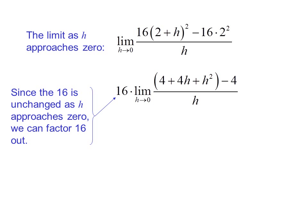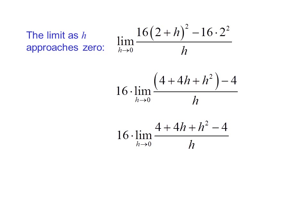We can do some algebra to evaluate the limit. Since the 16 is unchanged as h approaches zero, we can factor 16 out. We also expand (2+h) squared, then eliminate the parentheses, cancel the 4s, and cancel an h in the numerator and denominator. This gives us 16 times the limit as h approaches zero of (4+h), which is 16 times 4, or 64. So the limit is not approximately 64 but exactly 64.